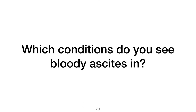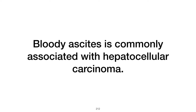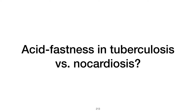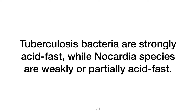Which conditions do you see bloody ascites in? Bloody ascites is commonly associated with hepatocellular carcinoma, among other conditions that can cause bleeding into the peritoneum. How does acid fastness differ between tuberculosis and nocardia? Tuberculosis bacteria are strongly acid-fast due to their mycolic acid-rich cell wall, whereas nocardia species are weakly or partially acid-fast, displaying a more variable staining pattern.